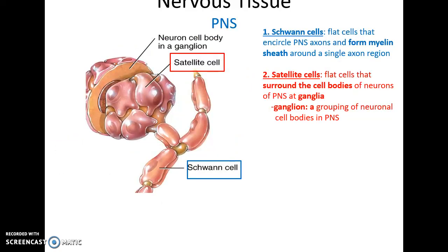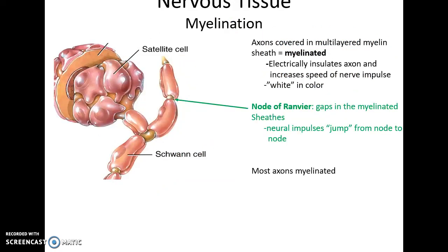In the peripheral nervous system, Schwann cells function like oligodendrocytes — they wrap around one section of an axon again and again, forming a myelin sheath that provides insulation and speeds up impulse transmission. Satellite cells wrap around areas where there are many neural cell bodies, helping to protect them. A large group of neural cell bodies in one area in the peripheral nervous system is called a ganglion.